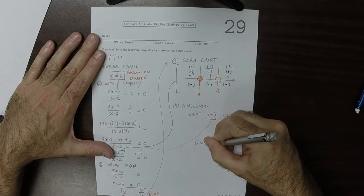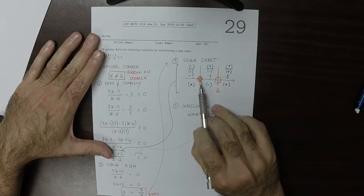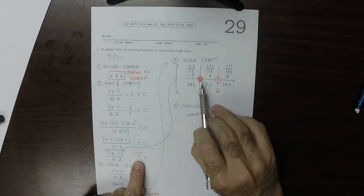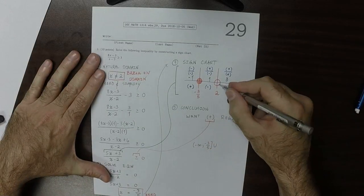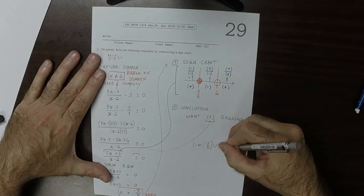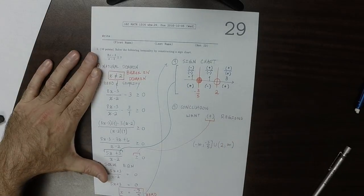So it would be negative infinity to negative three-fifths, and that is included because it is in the domain and the inequality says greater or equal. So that's included. And then union 2 to infinity. We cannot include 2 because it was not part of the domain. And that's the answer.